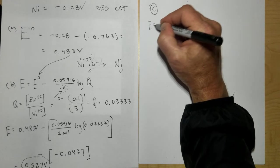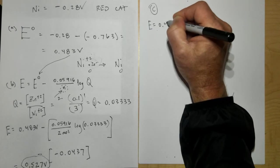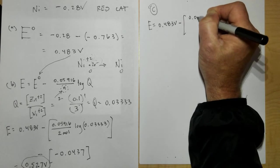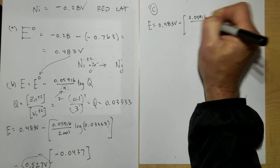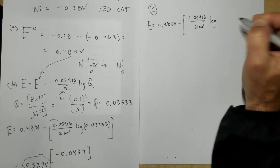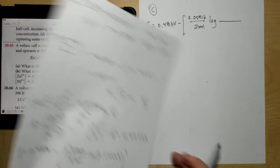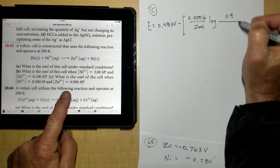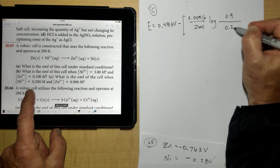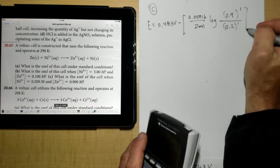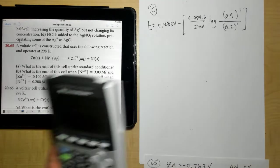So E is equal to my 0.483 volts minus the 0.05916 divided by 2 moles of electrons once again, times the log of Q. And this time, Q on the top would be my zinc of 0.9. And on the bottom would be 0.2. Remember, they're both to the first power.